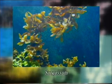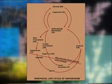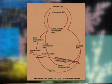The diplontic life cycle is best exemplified by Sargassum. In Sargassum, the thallus is diploid and sporophytic. It produces diploid male and female sex organs within specialised flask-shaped conceptacles. In both these sex organs, meiosis takes place which results in the formation of haploid gametes. The gametes fuse to form the diploid zygote which then develops into the diploid thallus, again completing the cycle.